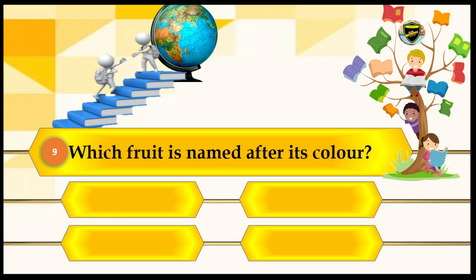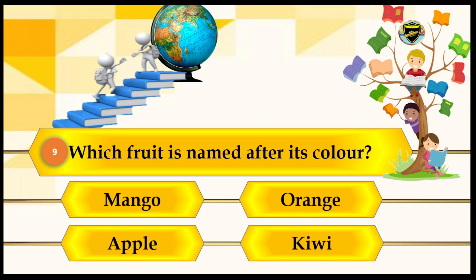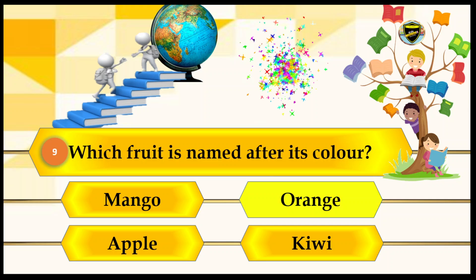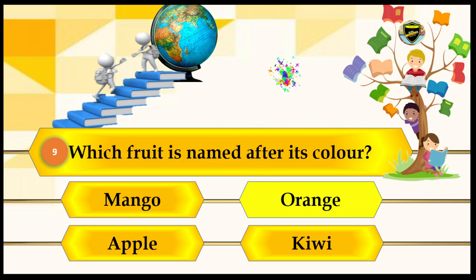Let's move on to the next question. Which fruit is named after its color? Your options are mango, orange, apple, and kiwi. The answer is orange. Let's see if orange is the right answer. That's the correct answer. Children, keep on submitting your answers quickly.